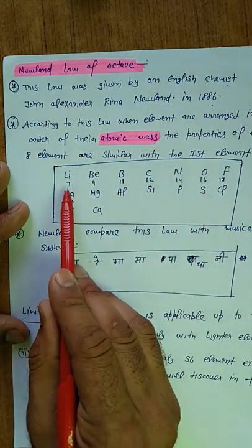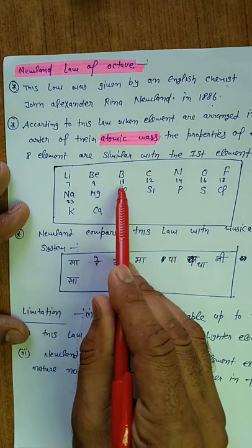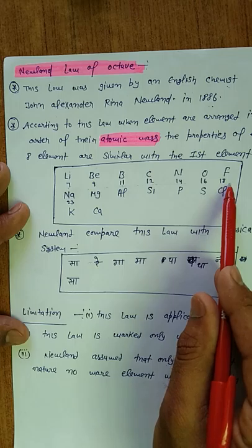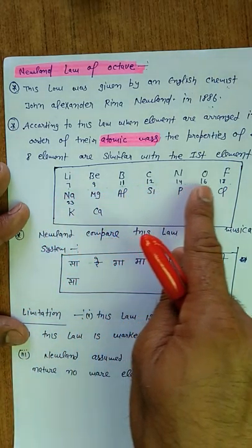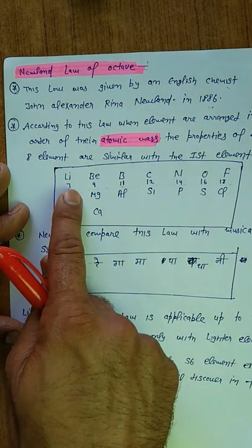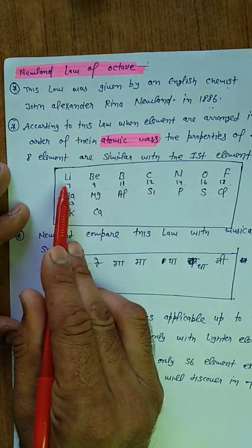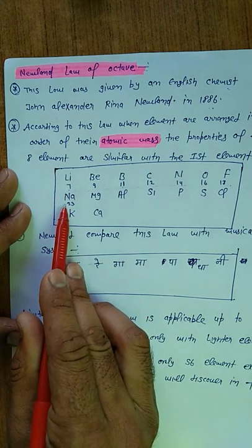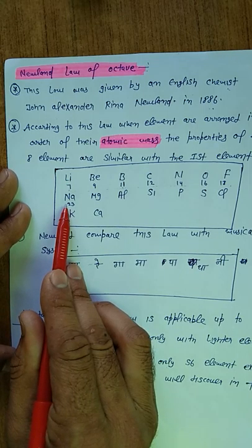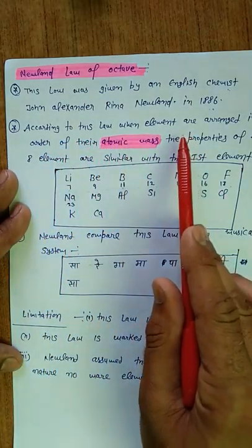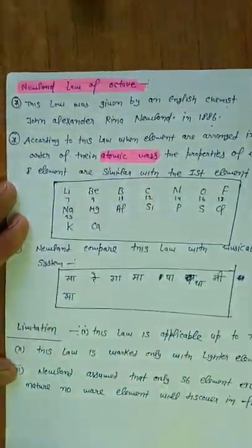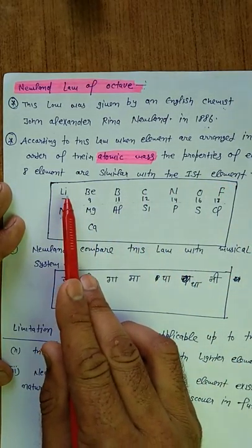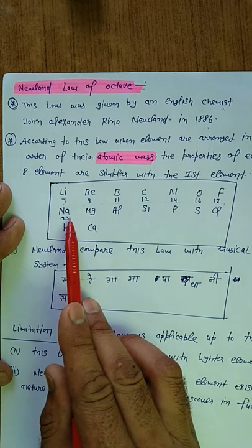to unhone kya kiya elements ko increasing order of their mass number ke according arrange kiya. Aapne padhenge ki lithium ka mass number kam hai, beryllium ka usse zyada hai, boron ka usse zyada hai. Means elements ko wo increasing order of their mass number ke according arrange kar raha hai. To unhone bola ki jab elements ko increasing order of their mass number ke according hum arrange karenge, to after every seven elements means property of the first element is very similar with the eighth element. Ki har ek first element ki property apne eighth element ke saath bilkul bahut zyada match kiya karenge. To aapne padhenge according to this law when elements are arranged in the order of their atomic mass, the property of the every eighth element are similar with the first element. Means first element ki property apne eighth element ke saath bilkul ditto match kiya karenge.